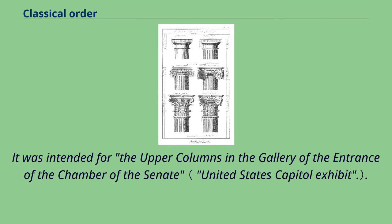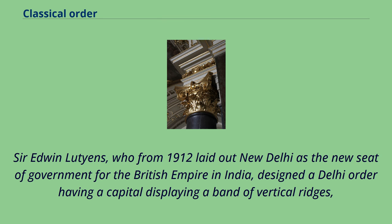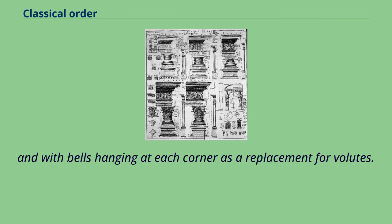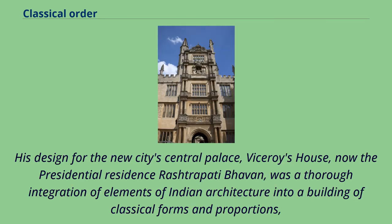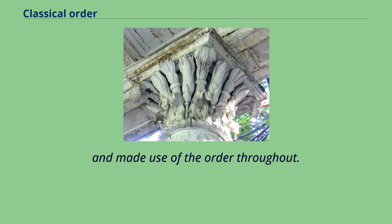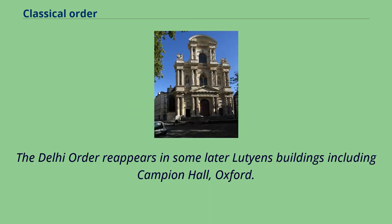Latrobe was encouraged to send a model of the tobacco order, which remains at Monticello. In the 1830s Alexander Jackson Davis admired it enough to make a drawing of it. In 1809 Latrobe invented a second American order employing magnolia flowers constrained within the profile of classical moldings, intended for the upper columns in the gallery of the entrance of the chamber of the Senate. Sir Edwin Lutyens, who from 1912 laid out New Delhi as the new seat of government for the British Empire in India, designed a Delhi order having a capital displaying a band of vertical ridges and bells hanging at each corner as a replacement for volutes. His design for the Viceroy's House — now the presidential residence Rashtrapati Bhavan — was a thorough integration of Indian architecture into classical forms, making use of the Delhi order throughout.